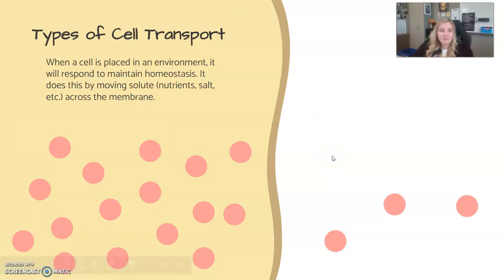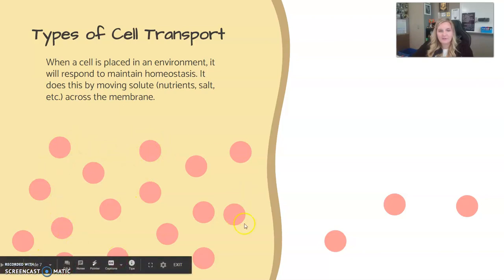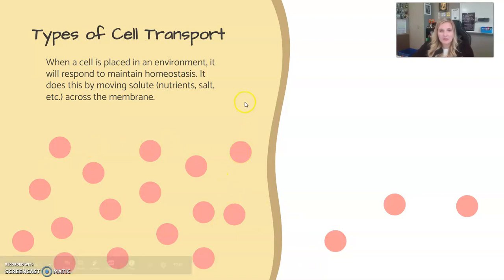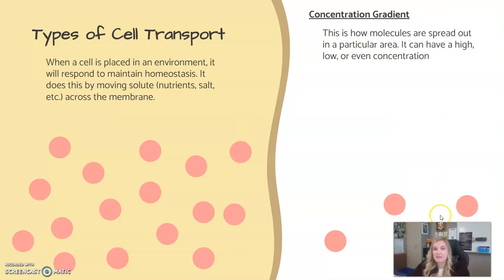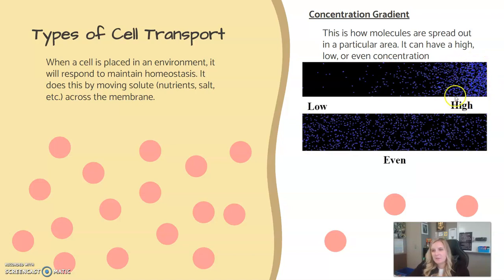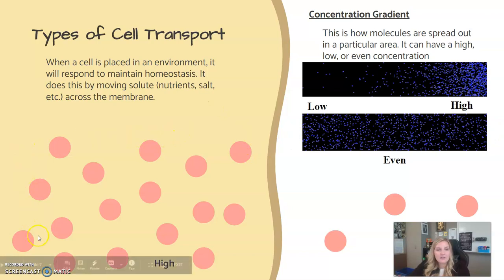There are different types of cell transport. When a cell is placed in a specific environment, it responds to maintain homeostasis by moving solutes, nutrients, salt, or even water across the membrane. Concentration gradient refers to how molecules are spread in a particular area — it can be high, low, or even. Naturally, a cell will move solutes from a high concentration area to a low concentration area to achieve balance.